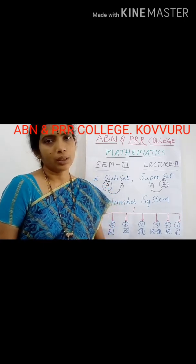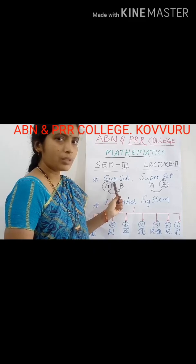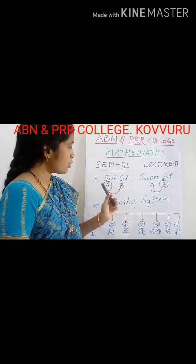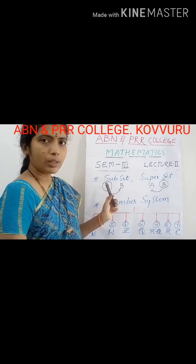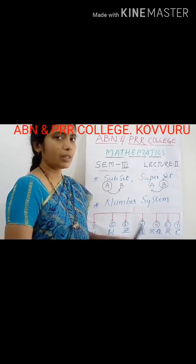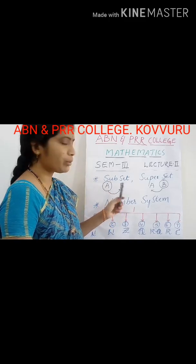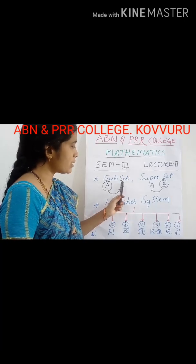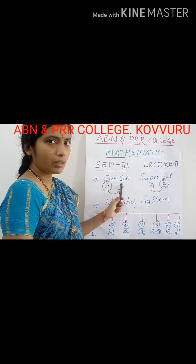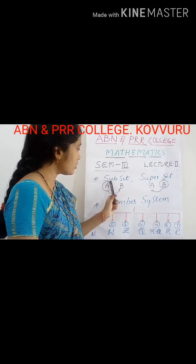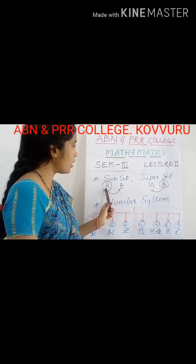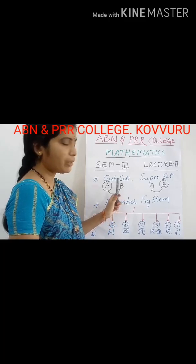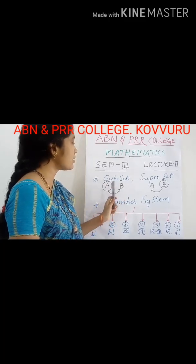The concepts are: what is a subset and what is a superset. Suppose you take two sets — sets are indicated by capital letters. Here I have taken two sets A and B. To say that set A is a subset of set B, it is enough to prove that all the elements in set A are also elements of B. Then we can say that set A is a subset of B.